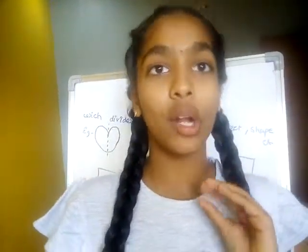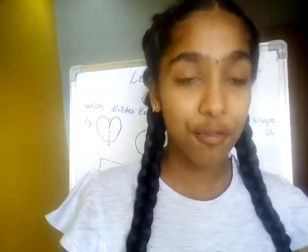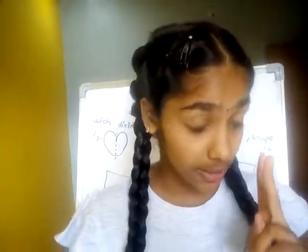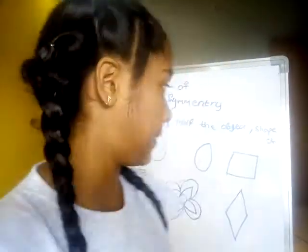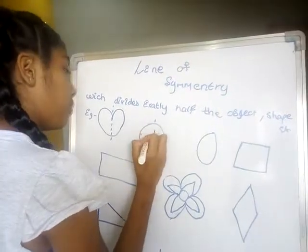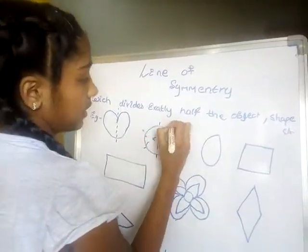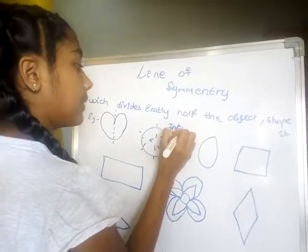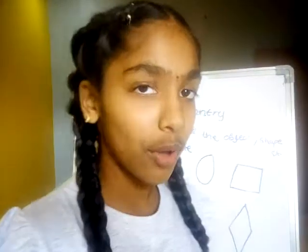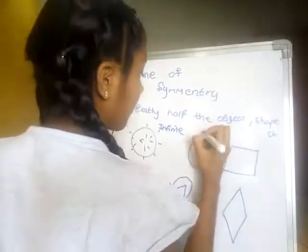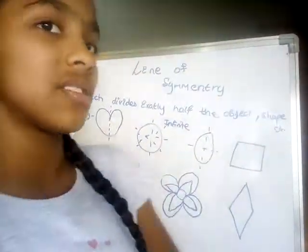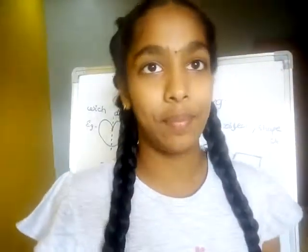Here I will tell you one important thing. We have a circle and we have an oval. See the difference between the circle and oval. In the circle, the lines of symmetry could be various — infinite lines of symmetry. In oval, see, only two lines of symmetry.